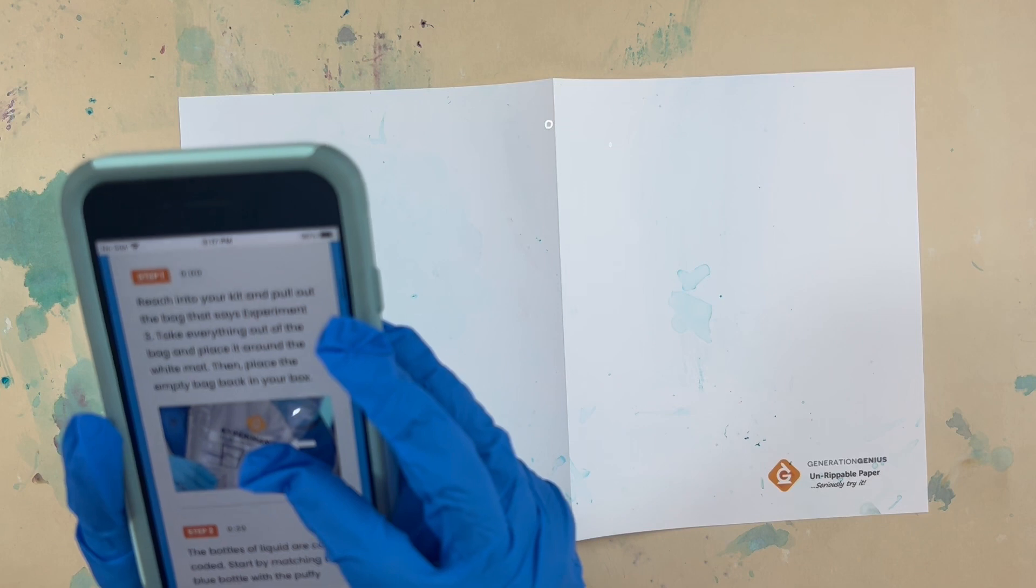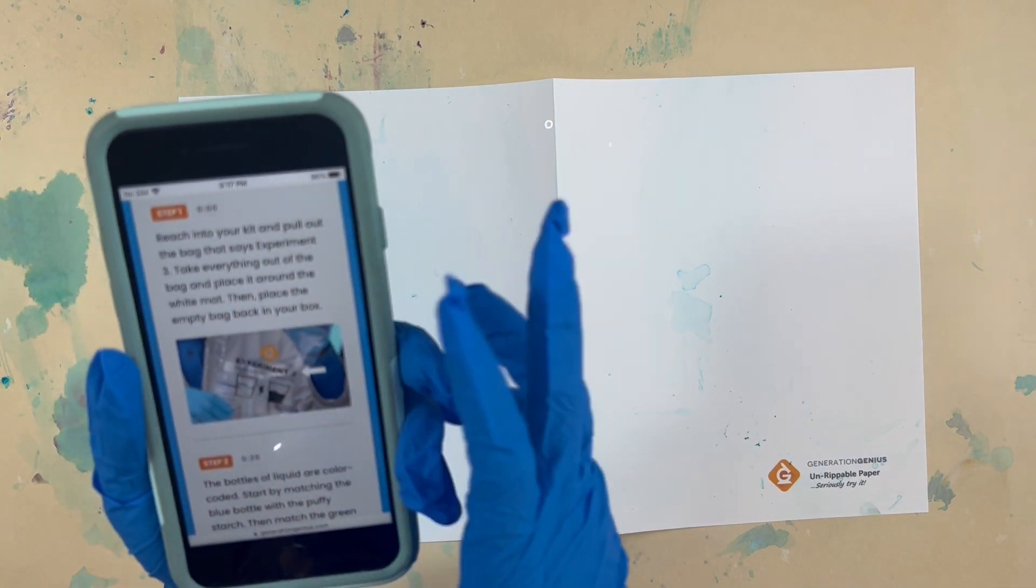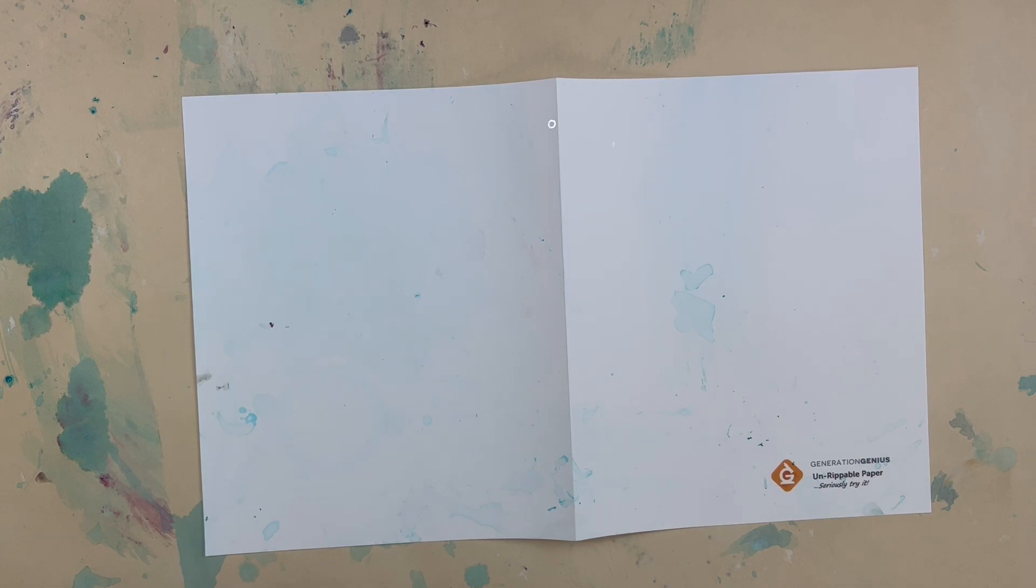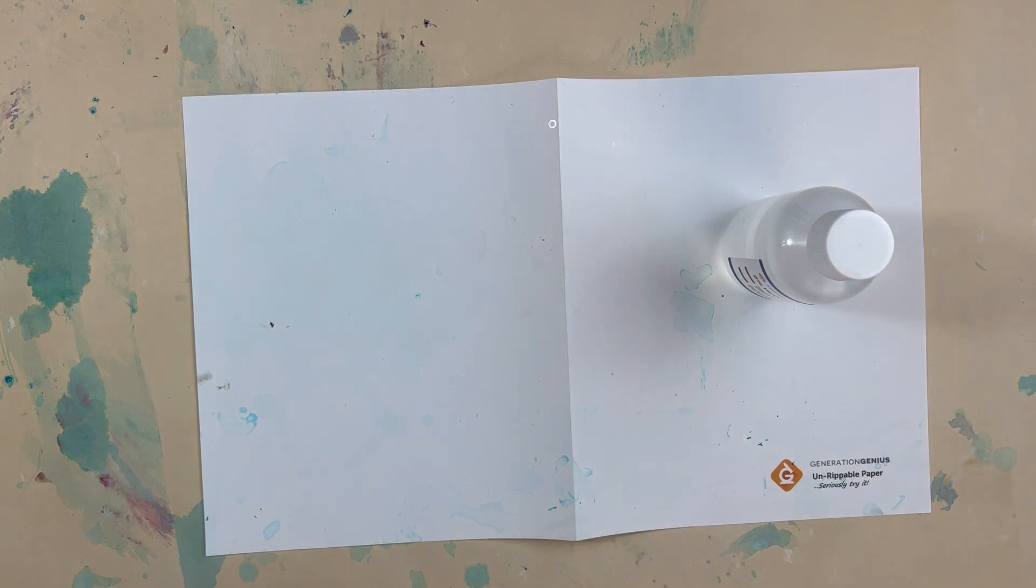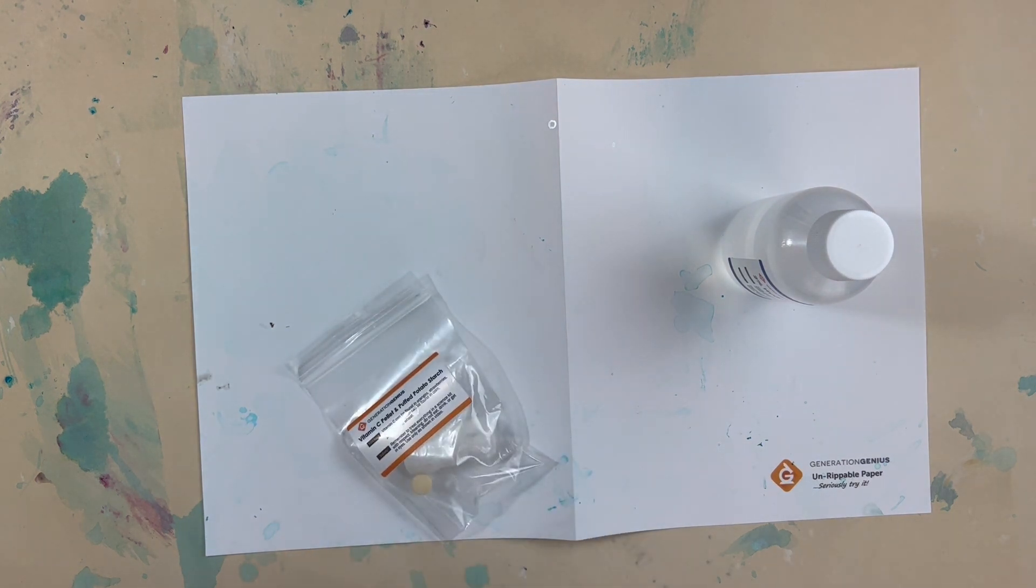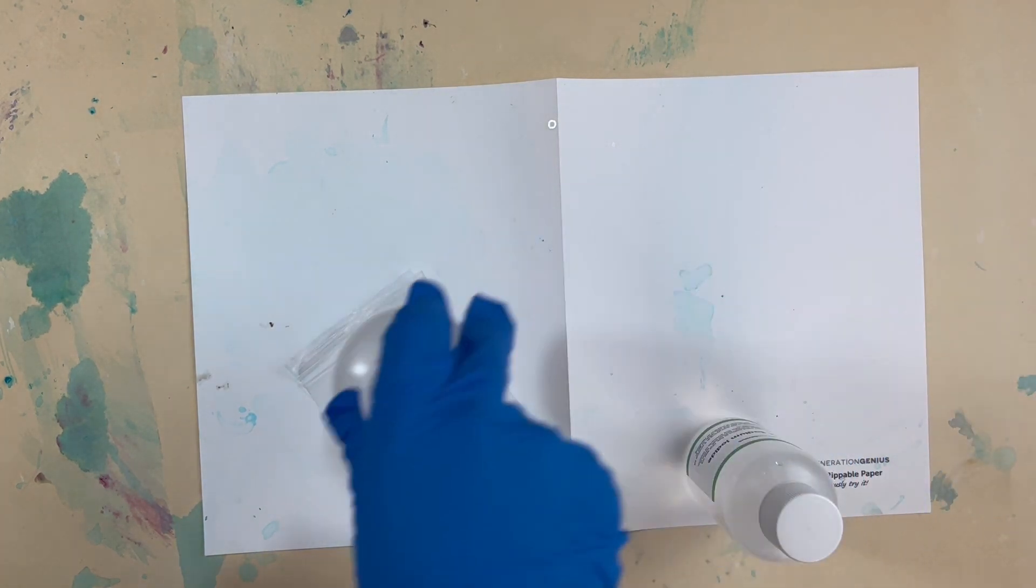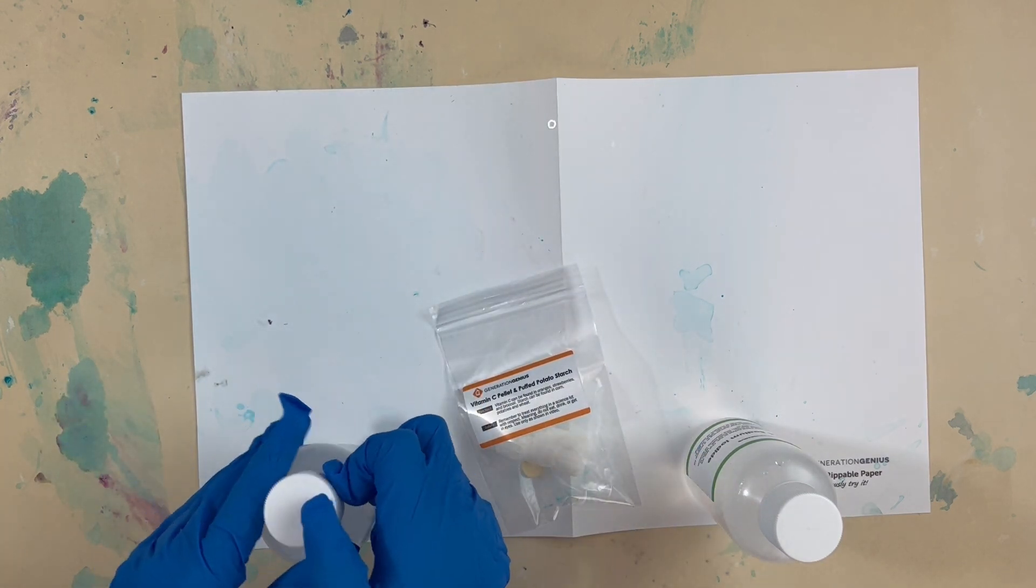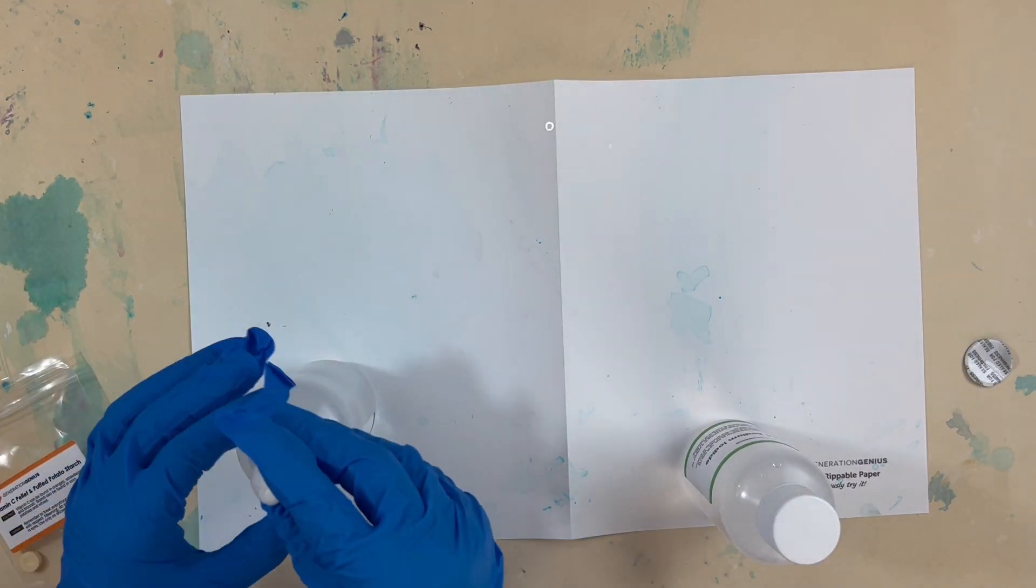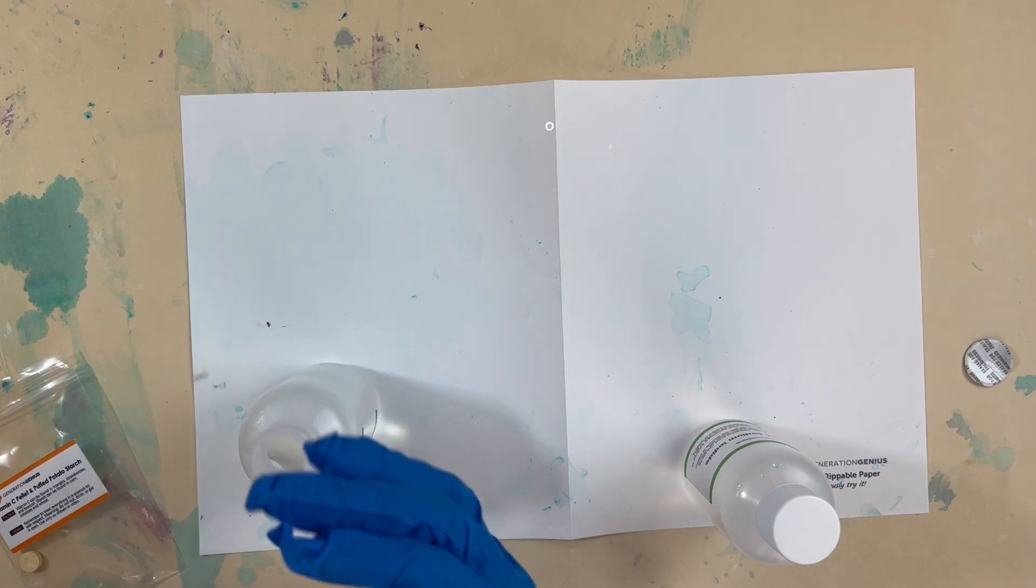Step one. Reach into your kit and pull out the bag that says experiment three. We already got that. So first, we got the blue bottle. The blue bottle with the potato starch. And then the green bottle with the tablet. There's the potato starch bottle. It's hydrogen peroxide, also known as H2O2. And in it goes. Mission accomplished.